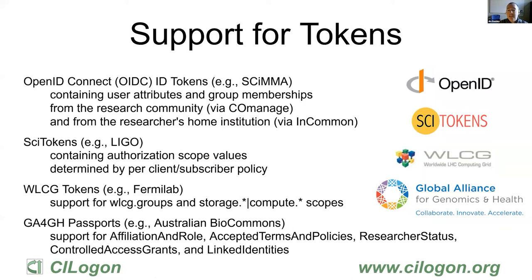We started out supporting OpenID Connect ID tokens for communities like CIMA that have OIDC applications needing user attributes and group memberships from both home institutions and research communities. We've extended CI Logon to support JSON Web Tokens for authorization. You'll hear later today about LIGO using SciTokens — in that case, the token contains authorization scope values based on LIGO's authorization policies. We also support WLCG tokens, with Fermilab being a very important motivating example. We support both group-based authorization through WLCG groups and capability-based authorization through storage and compute scopes in WLCG tokens.